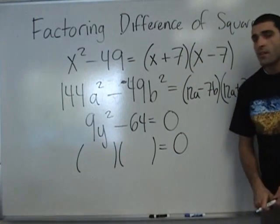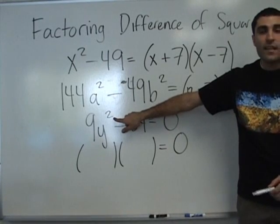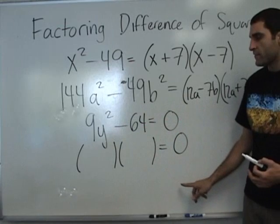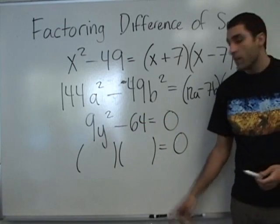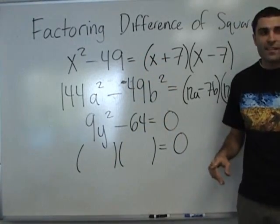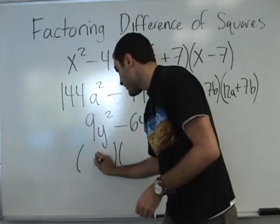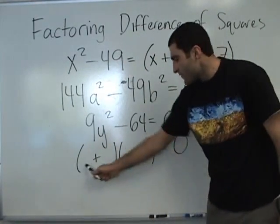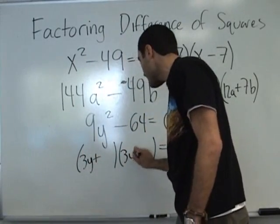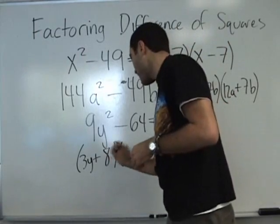So, factor, factor, equal to 0 — difference of squares. Just so you know, if this was a cubed, for example, it would not be a difference of squares anymore. There is such a thing called difference of cubes. So, plus minus — what goes in the front? 3y. What goes in the back? 8.